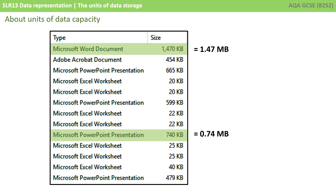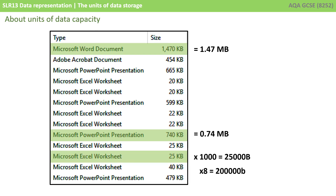Typically, once we go above 1,000 we want to represent the data in the higher unit. In a similar way, here we have an Excel document which is just 25 kilobytes. If we want to know how many bytes that is, it's 25,000 bytes — that's because a kilo is 1,000. If we want to know what it is in bits, then we take our 25,000 and multiply it by 8, as there are 8 bits in a byte.